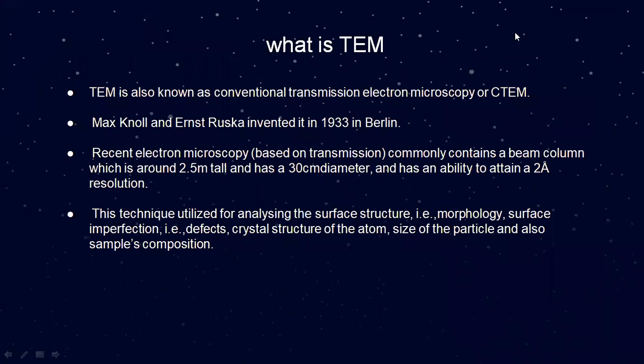What is a transmission electron microscope? The transmission electron microscope, also known as the conventional transmission electron microscope or CTEM, was invented by Max Knoll and Ernst Ruska in 1932–1933 in Berlin. Recent electron microscopes based on transmission commonly contain a beam column which is around 2.5 m tall and 30 cm in diameter, with the ability to attain high resolution. This technique is utilized for analyzing the surface structure, morphology, surface imperfections, defects, crystal structure of atoms, size of particles, and sample composition.